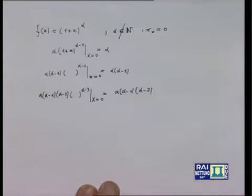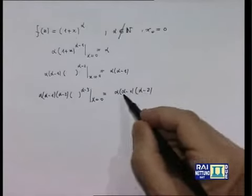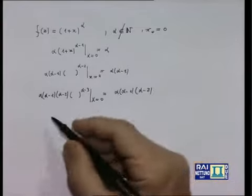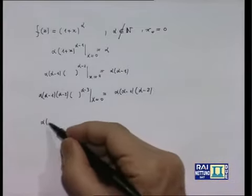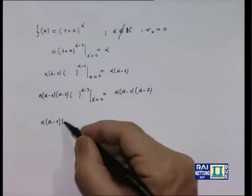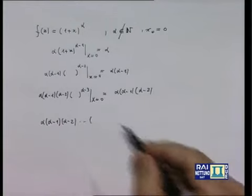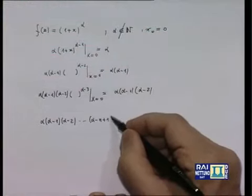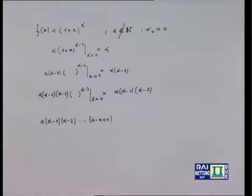I miei ascoltatori hanno già capito dove si va a parare. Quando derivo n volte, avrò il prodotto di n fattori a partire da alfa, tutti scalati di un'unità. Alla derivata ennesima avrò alfa, alfa-1, alfa-2, fino ad alfa-(n-1), cioè alfa-n+1. Mi devo fermare un passo prima di alfa-n, altrimenti conterei n+1 fattori. Questo è il valore della derivata ennesima nell'origine.